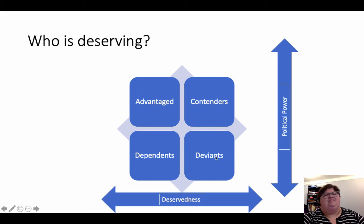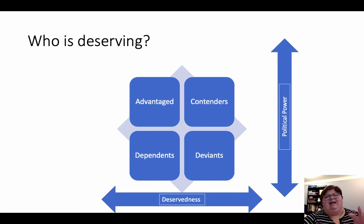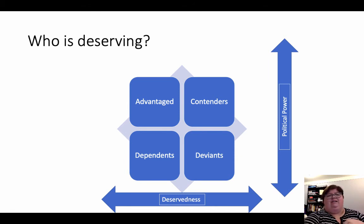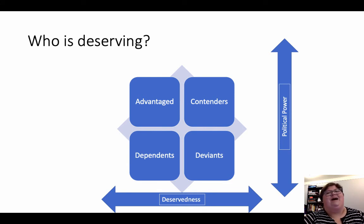Finally, we have deviants — criminals, terrorists, gangs, and in this day and age, undocumented immigrants are placed in this classification. Deviants lack political power and lack a positive framing in the mainstream. Thus they are both politically weak, and we don't want to have policies that help them. In fact, a lot of times we want policies that outright hurt them, because politically speaking that benefits the policymaker's goals. This helps show us how constructing a group contributes to how a policy is constructed.